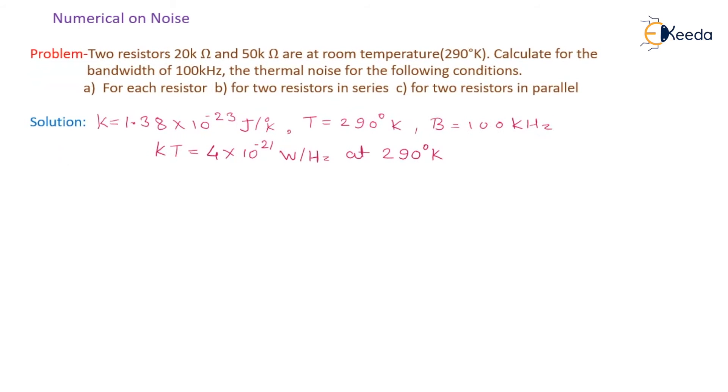Here the problem is defined: two resistors, 20 kΩ and 50 kΩ, are at room temperature, that is 290 degrees Kelvin. Calculate for the bandwidth of 100 kHz the thermal noise for the following conditions: a) for each resistor, b) for two resistors in series, c) for two resistors in parallel.